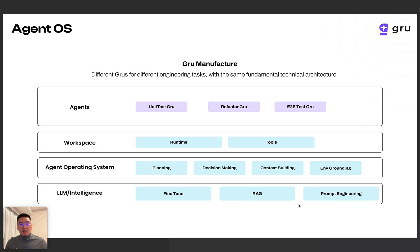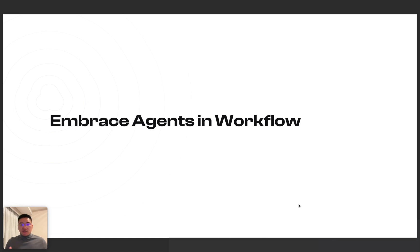We've talked about unit tests a lot, but our vision is not only unit tests — we want to build agents for different software engineering tasks, for example refactoring and end-to-end testing. It's almost impossible to build every agent from scratch, so we built a framework — an agent operating system, or agent OS. Different tasks may share similar runtime, similar tools, and similar context, so we abstract the common infrastructure. This operating system will enable us to build agents in this domain at a really fast pace. The agent era is coming — let's embrace agents in the workflow. Thanks for watching.